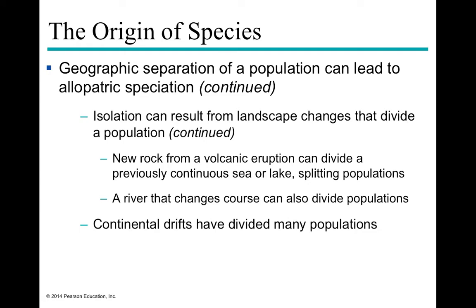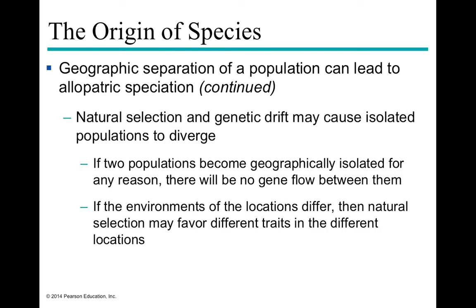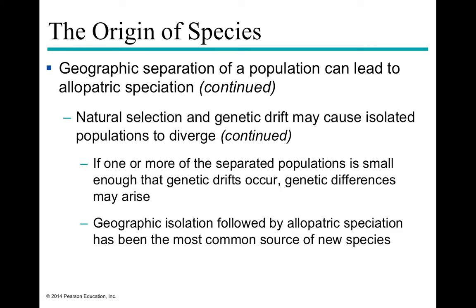Any physical barrier can lead to allopatric speciation. When two populations become geographically isolated with no gene flow and experience different environments, natural selection allows different traits to become prevalent in each location. This leads to changes in allelic frequencies, and eventually to genetic divergence such that the populations can no longer interbreed. Geographic isolation followed by allopatric speciation is the most common source of new species on the planet.